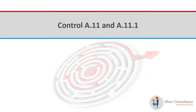Hello friends, this is Khushbusha. This presentation is prepared by me with the help of i4 Consultancy Services. As you already know, there are 14 groups of controls in ISO 27001:2013, that is A5 to A18. In this presentation, I am going to cover Control A.11, that is Physical and Environmental Security, and its sub-control A.11.1, that is Secure Areas. So let's start.